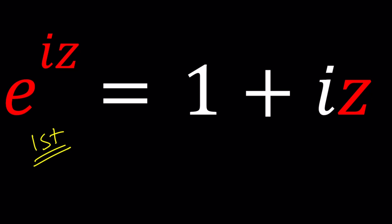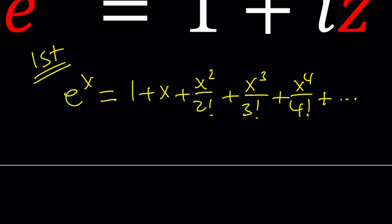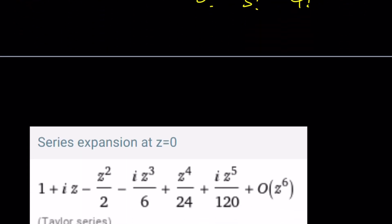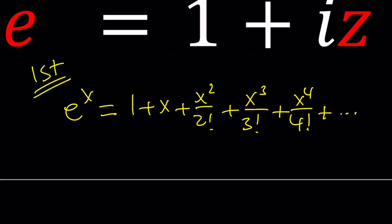You can basically write a function as an infinite polynomial or like a power series. So for example e to the power x can be written as 1 plus x plus x squared divided by 2 factorial plus x cubed divided by 3 factorial plus x to the fourth divided by 4 factorial and so on and so forth. But the million dollar question is why?